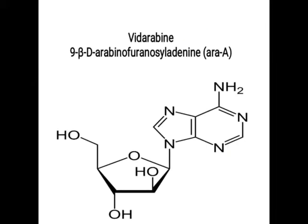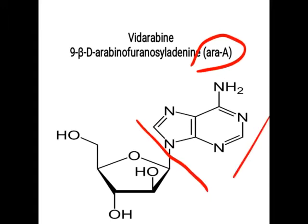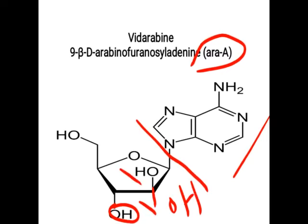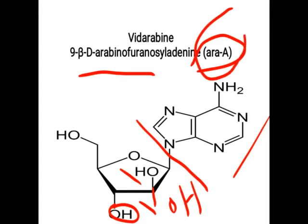The next drug is vidarabine, also called Ara-A. It consists of an adenosine part with a special sugar. If the hydroxy group is in the same plane as another hydroxy group, it is ribose sugar; but if these hydroxy groups are in different planes with different symmetry, this sugar is called beta-D-arabinofuranose sugar. Vidarabine consists of arabinofuranose sugar with adenine, so it is called 9-beta-D-arabinofuranosyl adenine, or Ara-A for short.